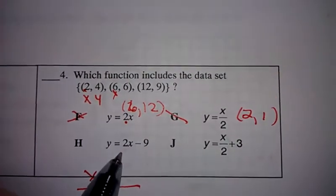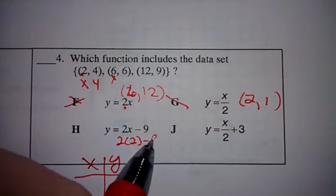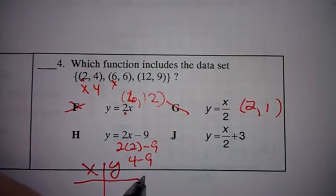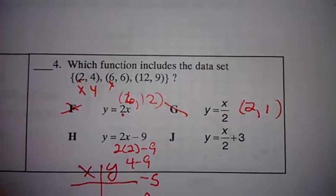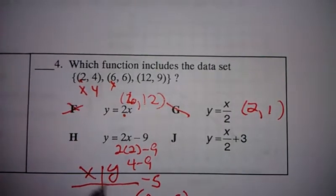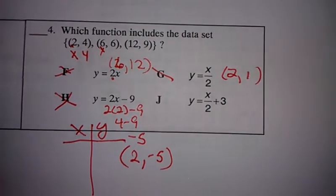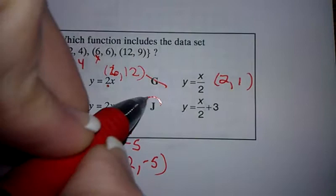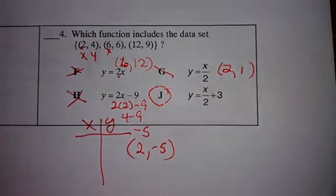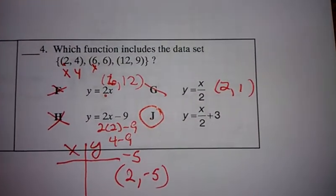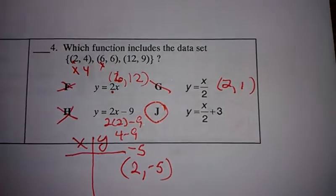If I look here 2 times 2 minus 9, 4 minus 9 is negative 5. Well, that would be 2 negative 5. That would not be it. Your answer ends up being J. Again, put in the calculator and match your table or plug in the points and find out what the answer is.